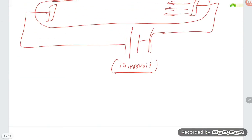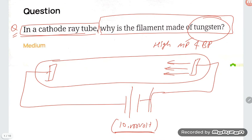That is why tungsten filament is used in the cathode ray tube. Thank you so much for watching, friends. If you find this video helpful, please like and subscribe to the channel and don't forget to comment.